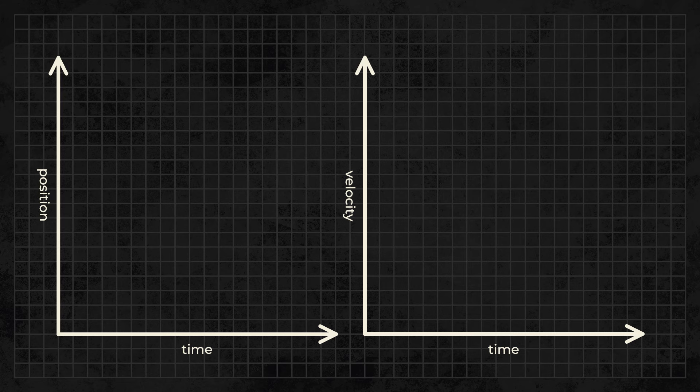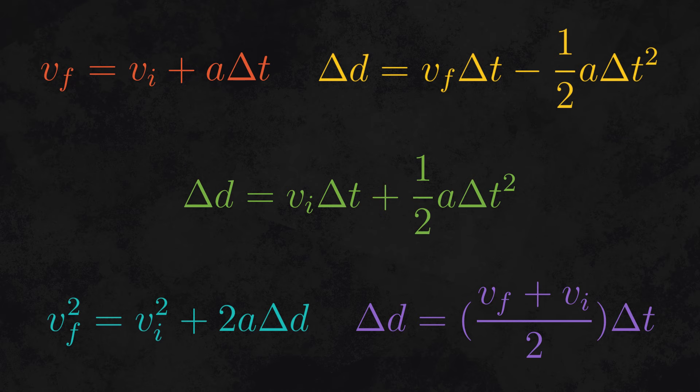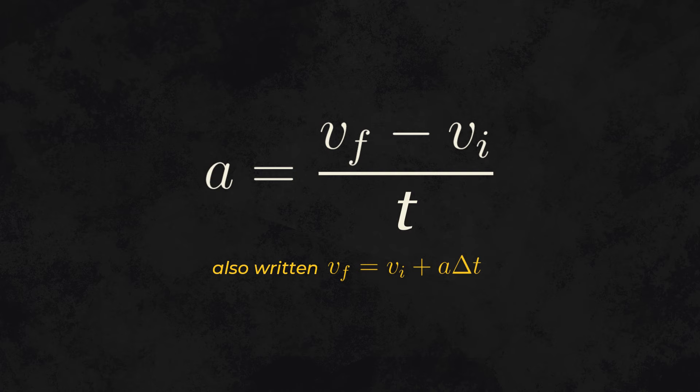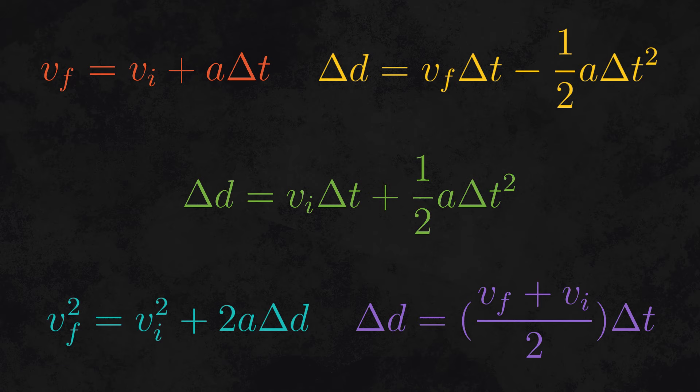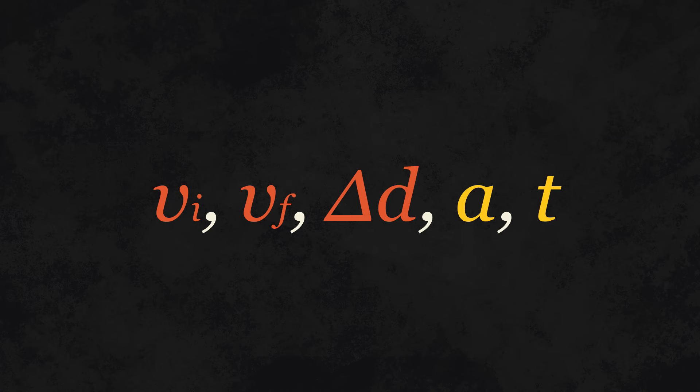In addition to learning how to analyze graphs, you'll also have to know how to manipulate the variables of motion using algebra. Luckily, there's five kinematic equations that relate all these variables. The most important one is A equals final velocity minus initial velocity over time. This defines acceleration. If you look carefully at these equations, you'll notice that each one relates four variables together and is missing one. For example, the equation that I just mentioned doesn't include displacement. This means that if you have any three motion variables, you can find the other two by using one or more of these equations.